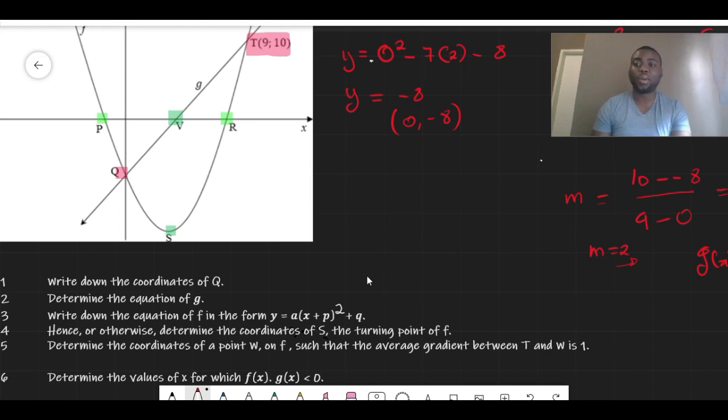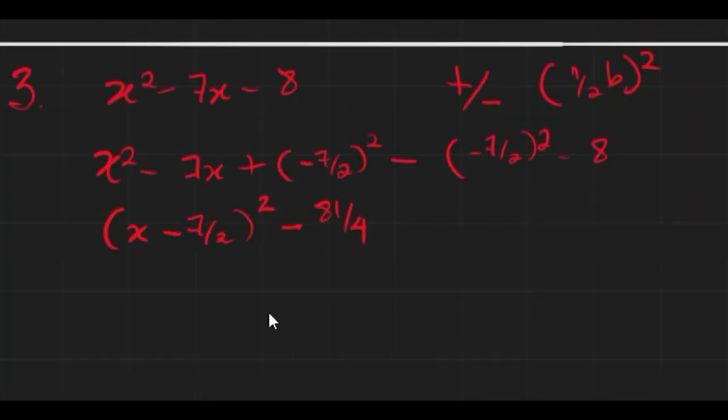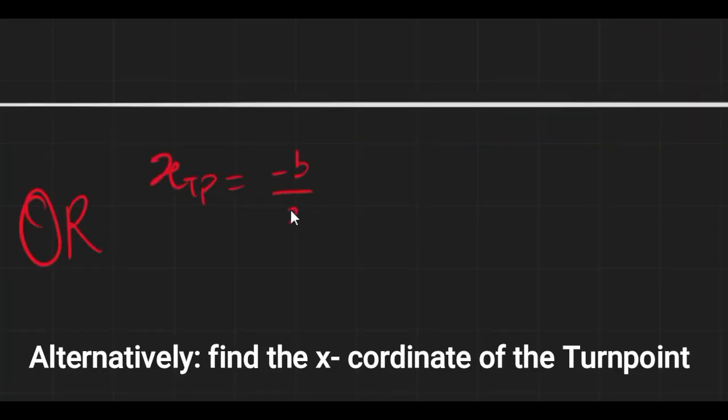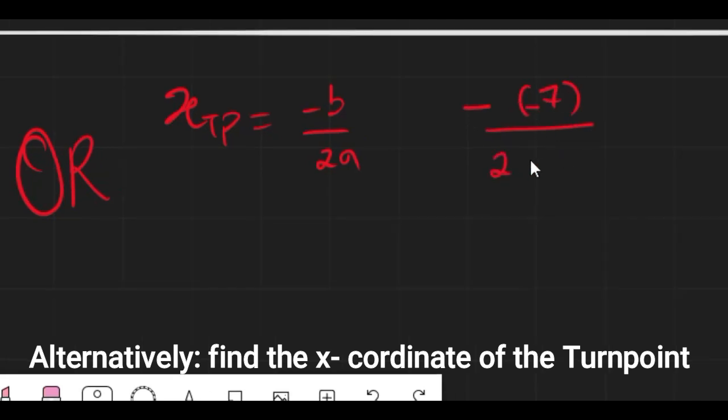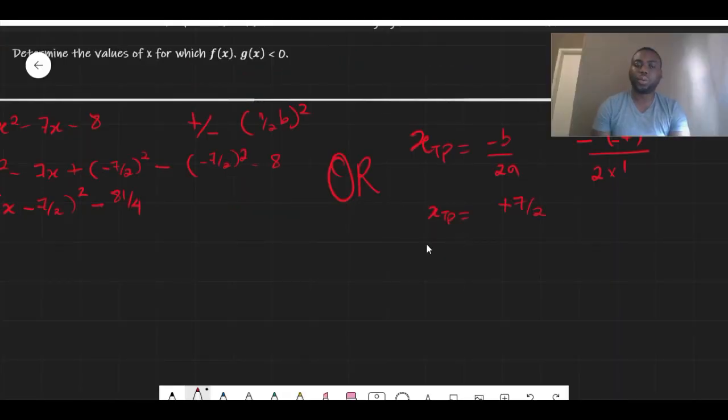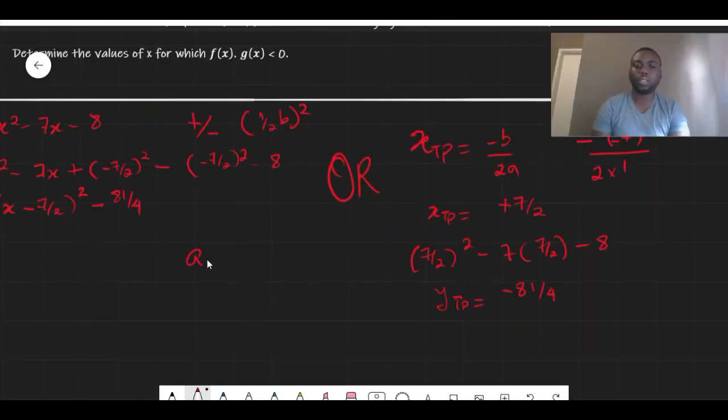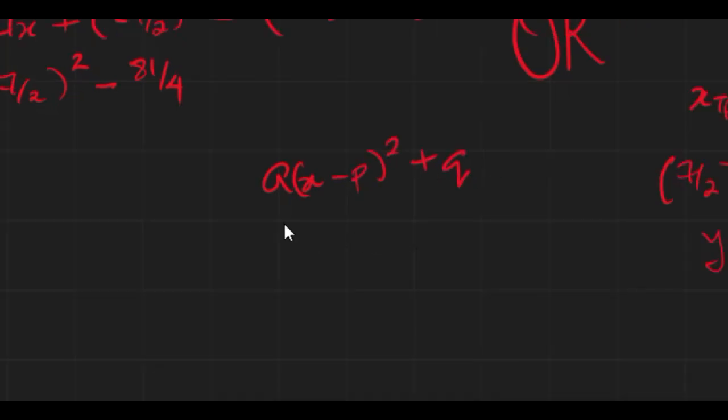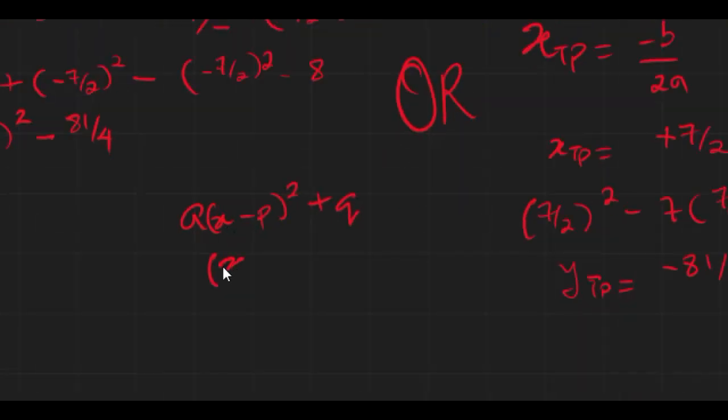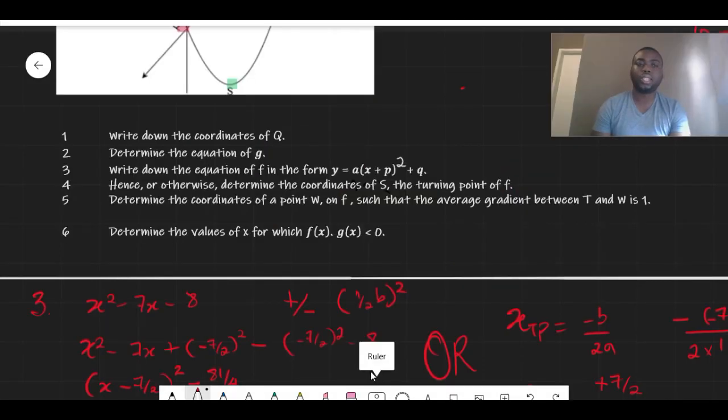So the first way is by completing the square, and this will be your answer. Next we substitute it into our original equation and it's going to look like this. The format says our a stays the same, so this is 1, and your x is 7/2, while your q is -81/4, which will give you the same answer.